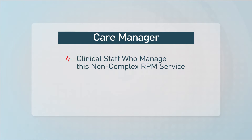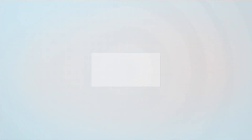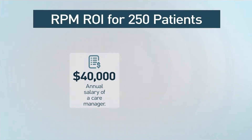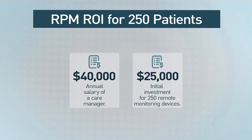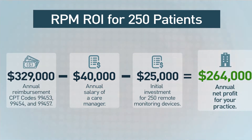So, what are your costs? We've already mentioned the devices at $25,000 or so. You'll also need a care manager to manage these patients each month. Each care manager can manage up to 250 patients per month. The annual salary of a care manager is around $40,000. So subtract these costs from the final total and your practice will net $264,000 — all from one RPM program.